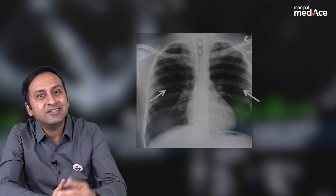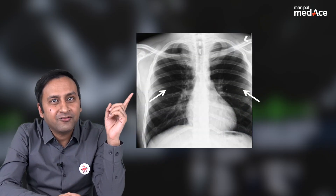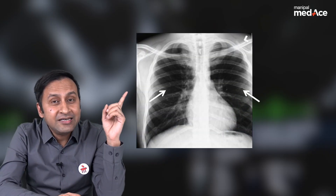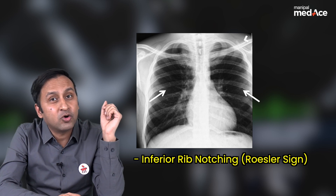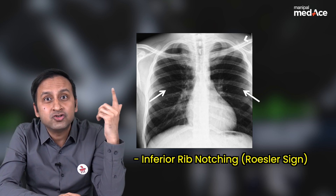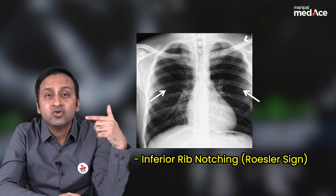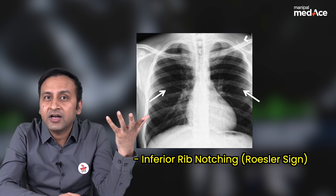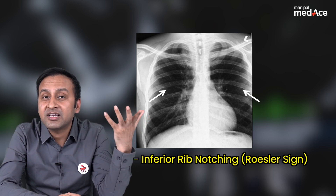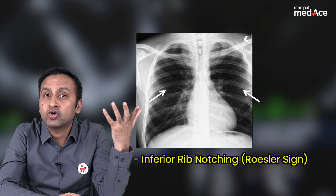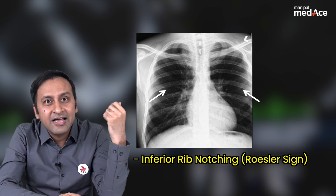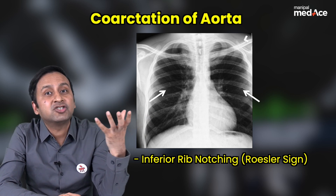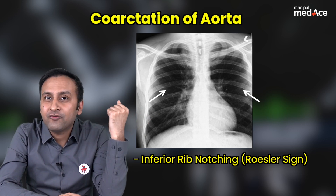Coming on to our last case, look at this chest radiograph. You can see that the under surface, or inferior surface, of ribs on either side is notched. This notching of the under surface of the ribs is called the Roesler sign, and we get it in patients with coarctation of aorta.